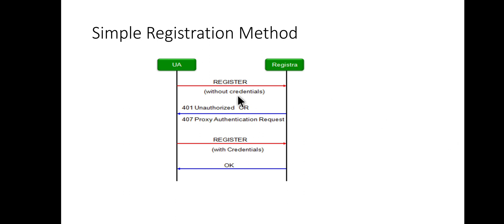Suppose we have a UE and a server. The UE sends a REGISTER message without credentials. The server sends back a 401 Unauthorized message because there are no credentials. The UE then sends another REGISTER message with credentials, and the server responds with 200 OK, meaning registration is completed. This is the simple registration process — first without credential, then with credential.